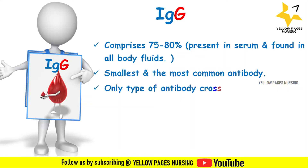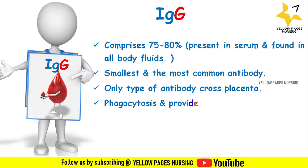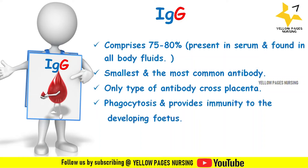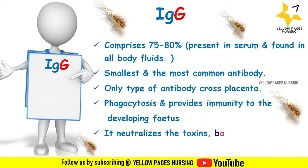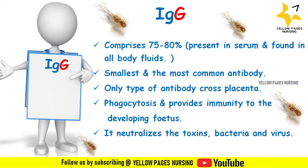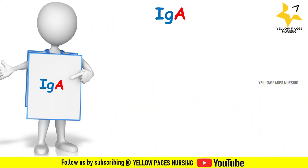Immunoglobulin G is the only type of antibody that crosses the placenta and protects the infant until its birth. IgG facilitates phagocytosis and provides immunity to the developing fetus. It neutralizes toxins and pathogens such as bacteria and viruses, offering protection to the body.